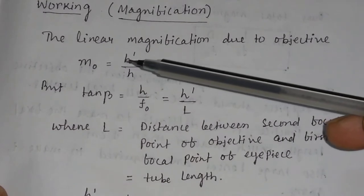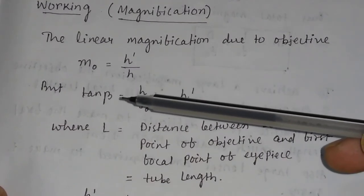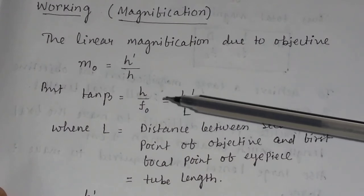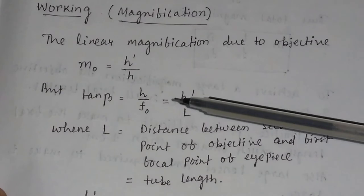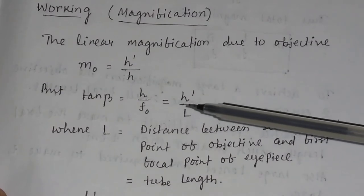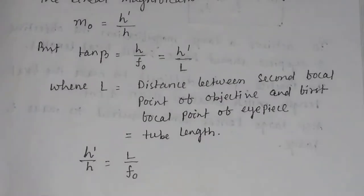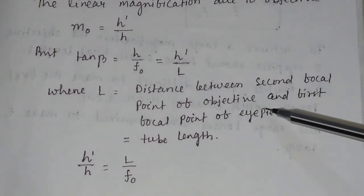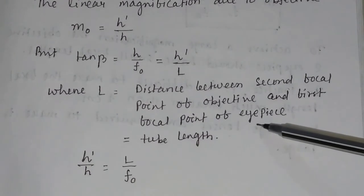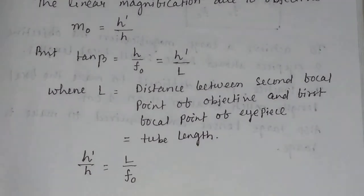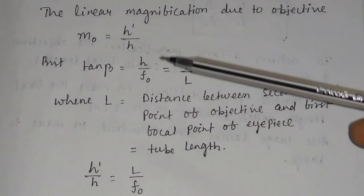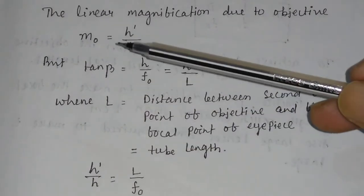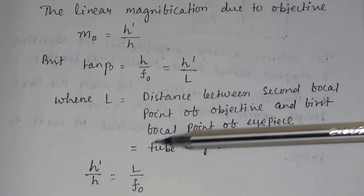So from the figure, M0 equals H'/H, and tan β equals H/F0, which equals H'/L. From this equation, H/H' equals F0 divided by L, where L is the tube length — the distance between the second focal point of the objective and the first focal point of the eyepiece. Substituting, H'/H equals L/F0, so M0 equals L divided by F0.